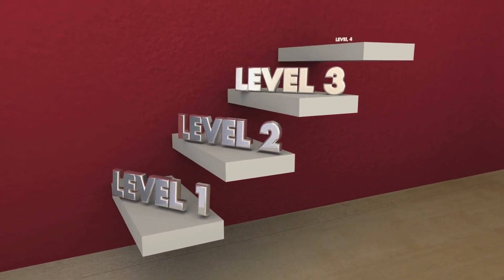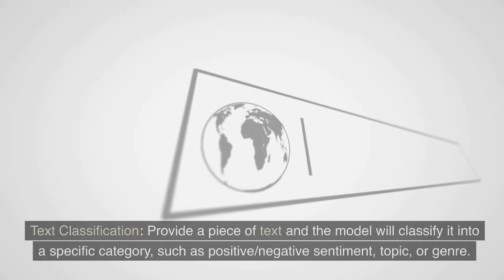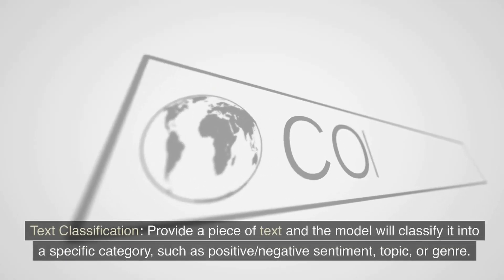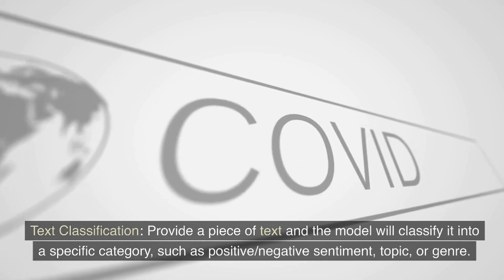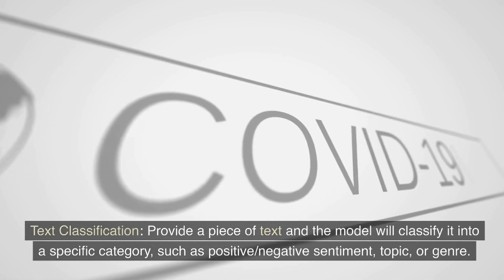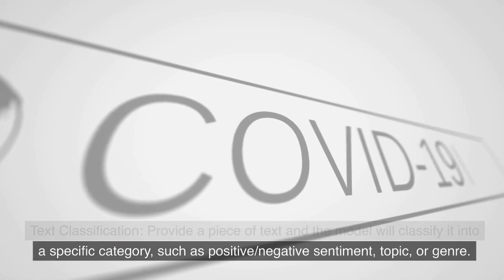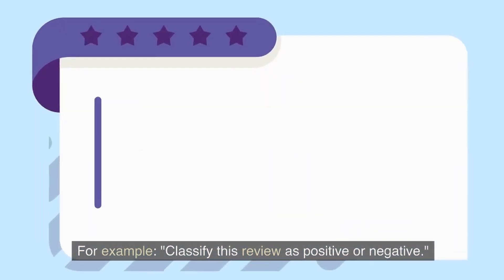Text classification. Provide a piece of text and the model will classify it into a specific category, such as positive or negative sentiment, topic, or genre. For example: classify this review as positive or negative.